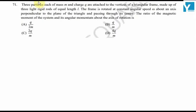Three particles each of mass m and charge q are attached to the vertices of a triangular frame made up of three light rods of equal length L. The frame is rotated at a constant angular velocity omega about an axis perpendicular to the plane of the triangle passing through its center. The ratio of the magnetic moment of the system and its angular momentum about the axis of rotation is?